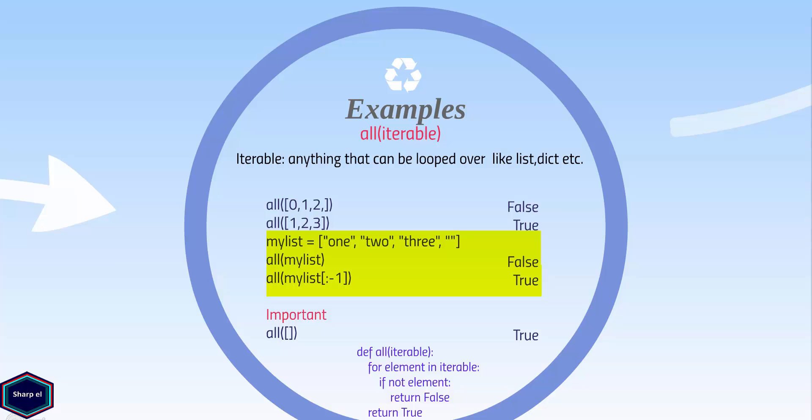Now I would like to tell you something very important, which is very simple but a little confusing at first. What if we have an empty iterable, like an empty list or a dictionary? Surprisingly, we get true as a return value. If you look at the implementation of all function, you can understand this very easily. Because all function never executes the for loop in case of an empty iterable, so it returns true.